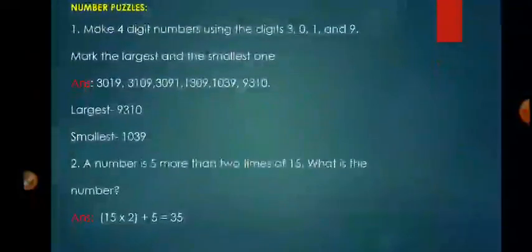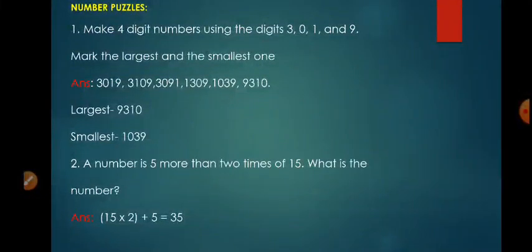Here are some number puzzles. Question number one: make four-digit numbers using the digits 3, 0, 1, and 9, and mark the largest and the smallest one. I hope you have understood the question — we have to make four-digit numbers using the digits 3, 0, 1, and 9. So let's start.